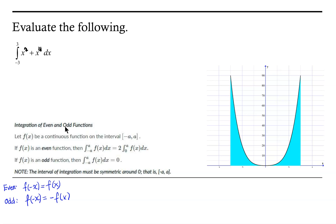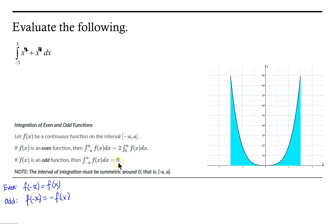So let's take a look at this theorem. It says: let f be a continuous function on the interval from negative a to a. If f is an even function, then the integral over that interval is equal to 2 times what you would get if you integrated simply from 0 to a. If f of x is an odd function, then if you integrate from negative a to a, you get 0.